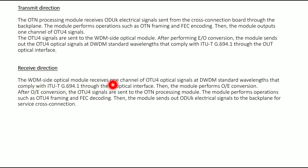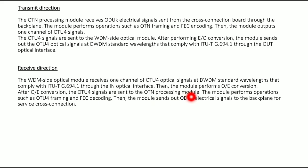Receive direction detail: The WDM side optical module receives the channel of OTU4 optical signal at DWDM standard wavelength compliant with ITU-T standards via the in-optical interface. Then the module performs optical to electrical conversion. After conversion, the OTU4 signals are sent to the OTN processing module, which performs OTU4 framing and FEC decoding. Then the module sends out the OTU4 electrical signals to the backplane for service cross connection.